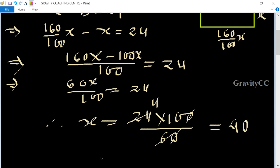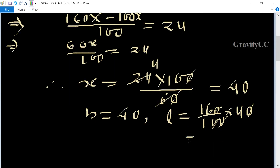And length equal to 160 upon 100 into 40. So zero zero cancel, equal to 64.